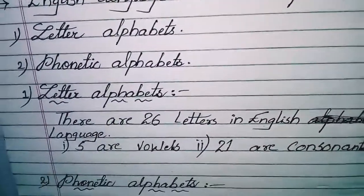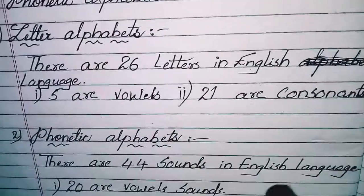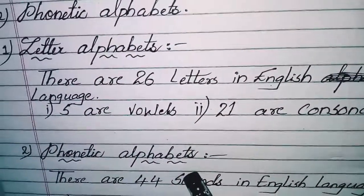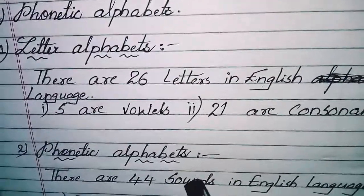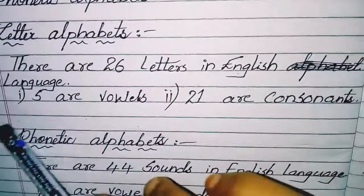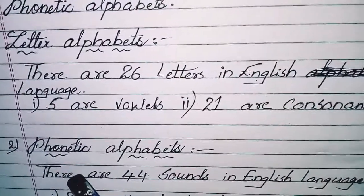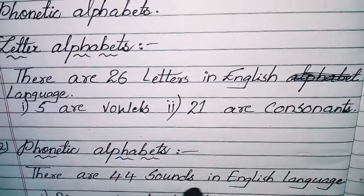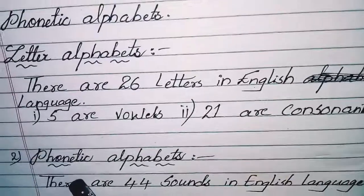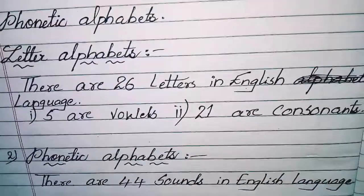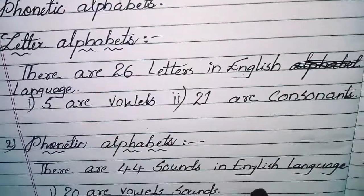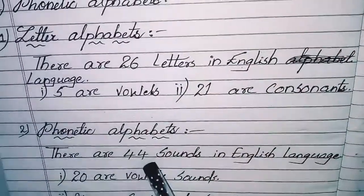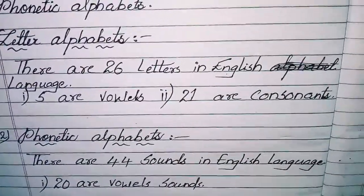Next, I will show you the phonetic alphabet. Phonetics refers to the study of speech sounds — how the spelling of a word is pronounced in the language. There are 44 sounds in the English language — how many? 44 sounds in the English language.